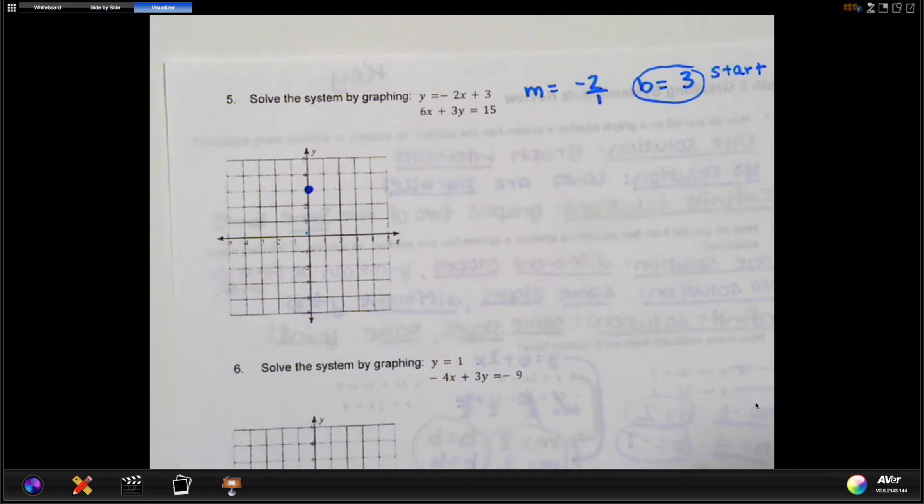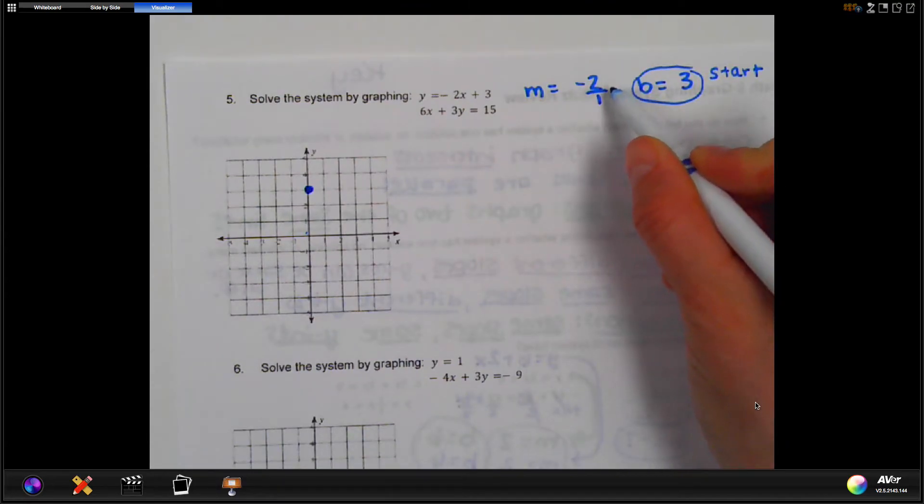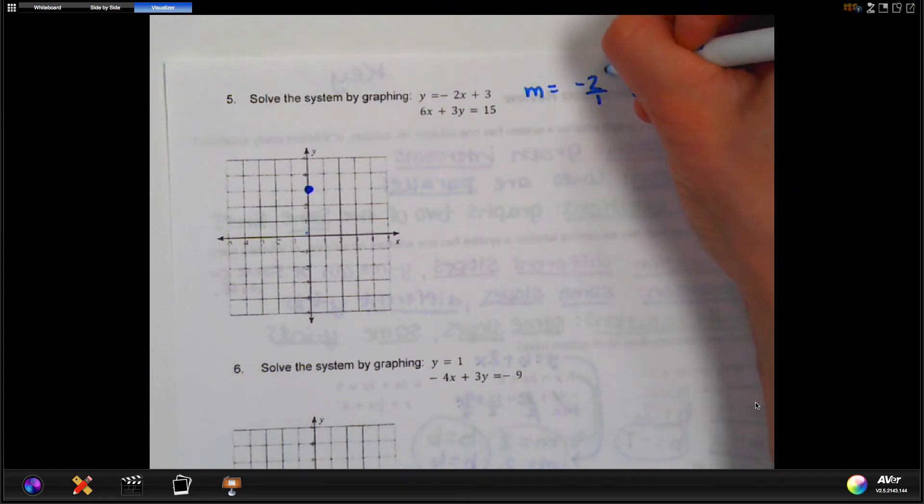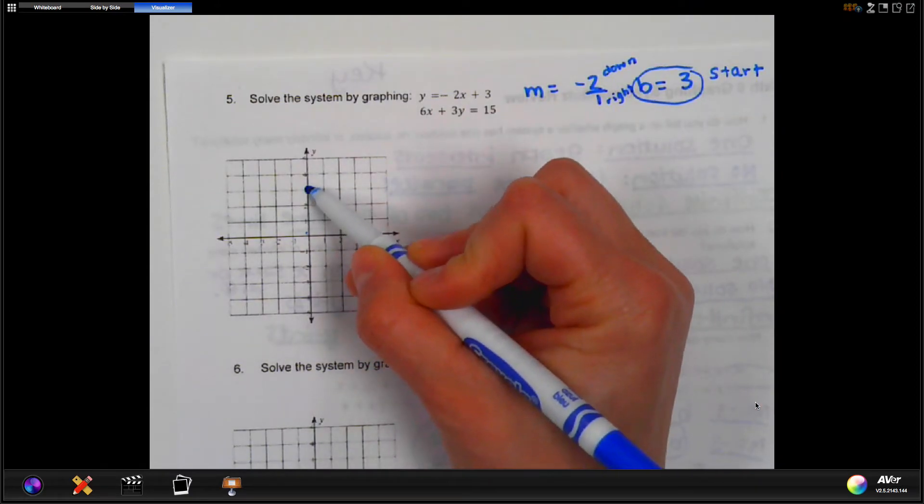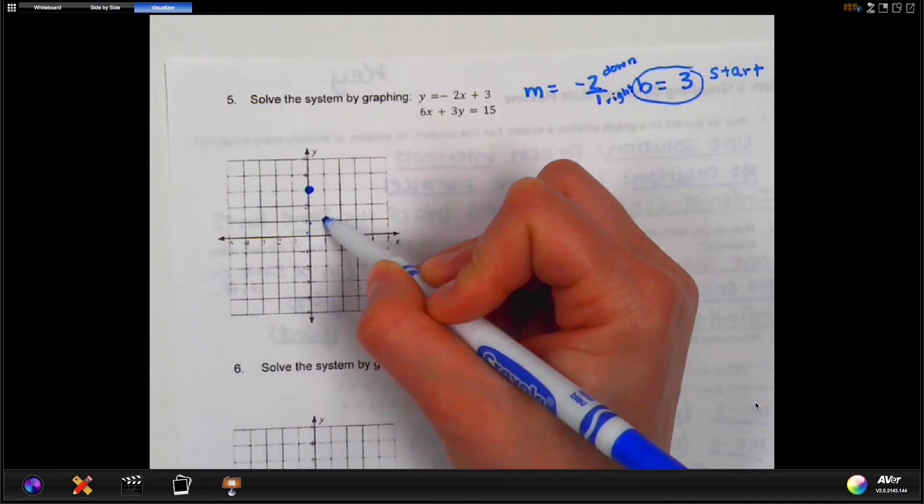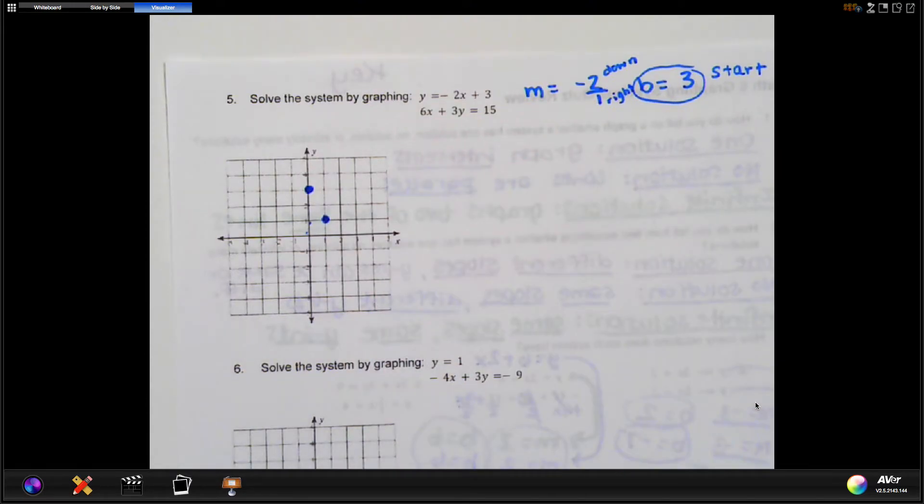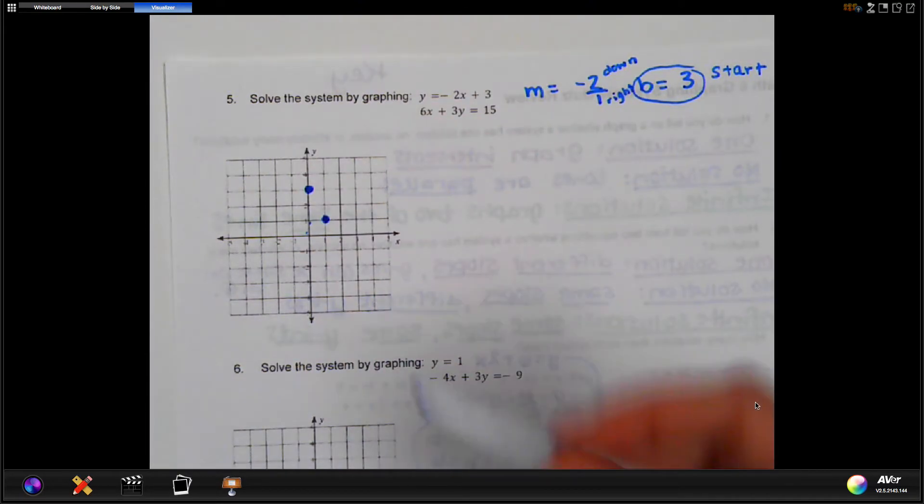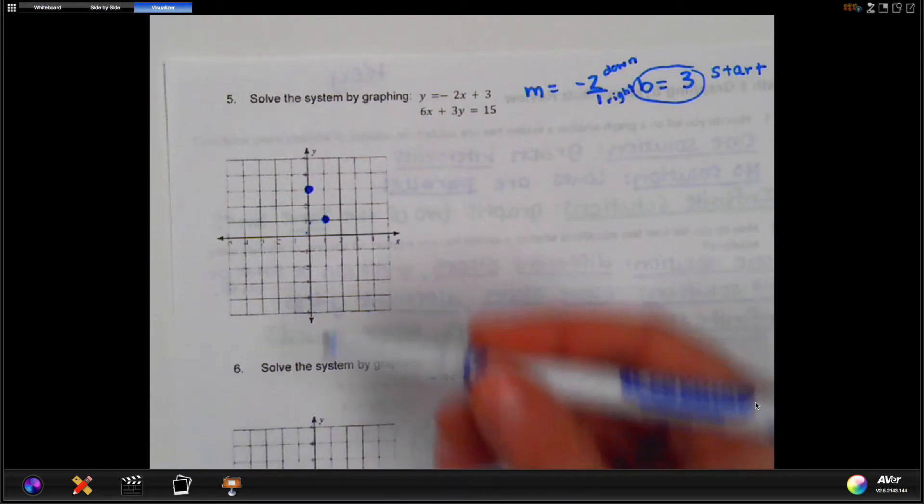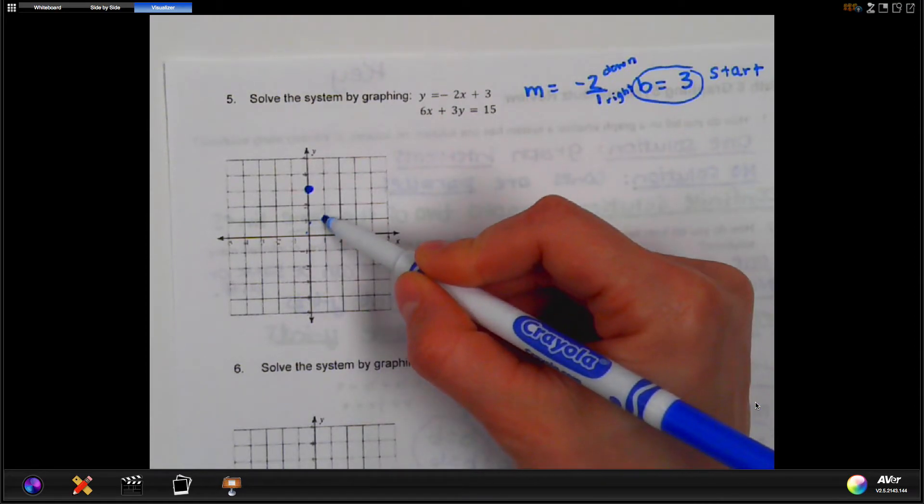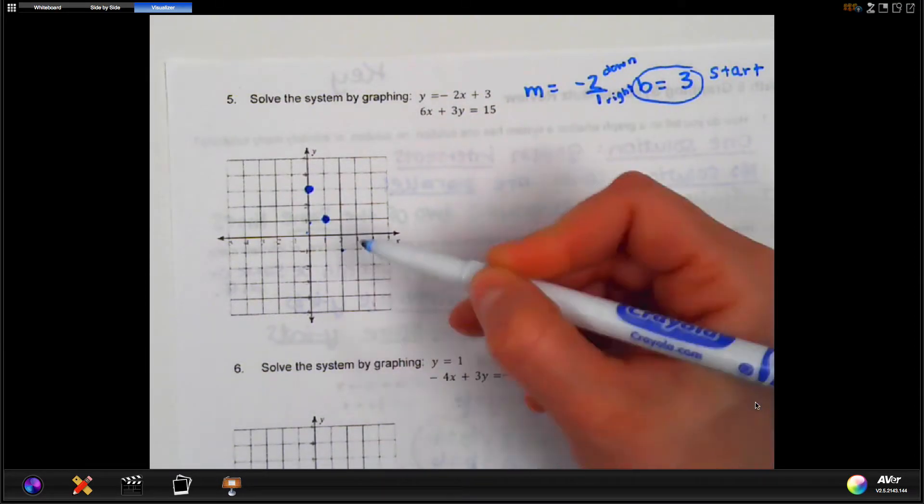Okay, and then I'm going to use my slope to tell me where to go from there. So since this is negative, this means I'm going to go down 2 and right 1. So I'm going to go from that spot down 1, 2, and I'm going to go right 1. I'm going to make a second dot. Now, if you want to be completely accurate, you can continue that pattern to make more dots. So from there, go down 2, right 1, make another dot. Down 2, right 1, down 2, right 1.